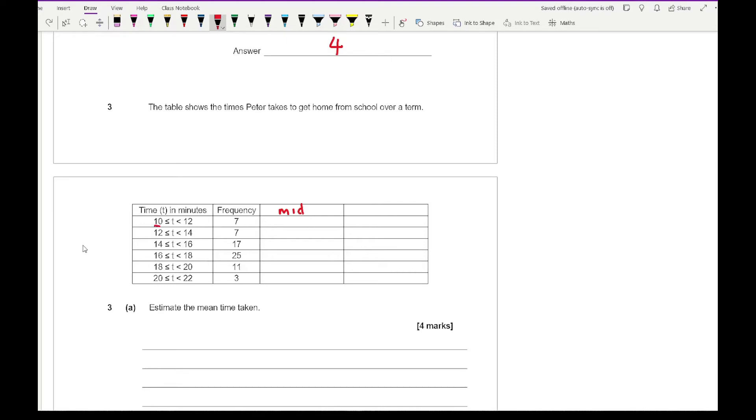For this we just need to work out the midpoint. If you're not sure how to work out the midpoint, just simply add the two numbers together and divide by two, or you can just work out the middle number. So the midpoint between 10 and 12 is 11, then we're looking at 13, then 15, then 17, then 19 and 21. You might find they go up in twos and there's a regular pattern, but just be mindful that the groups can sometimes change in their range.